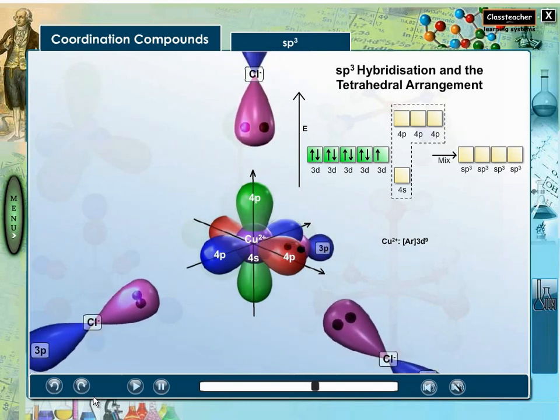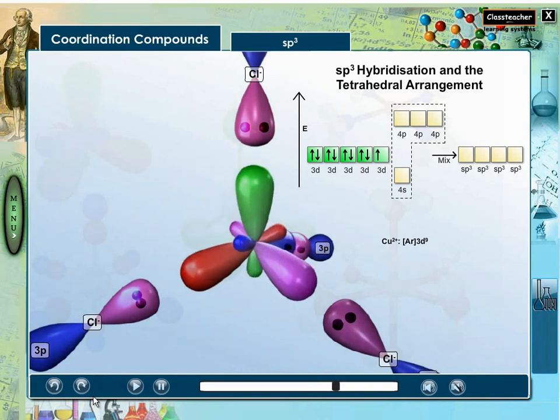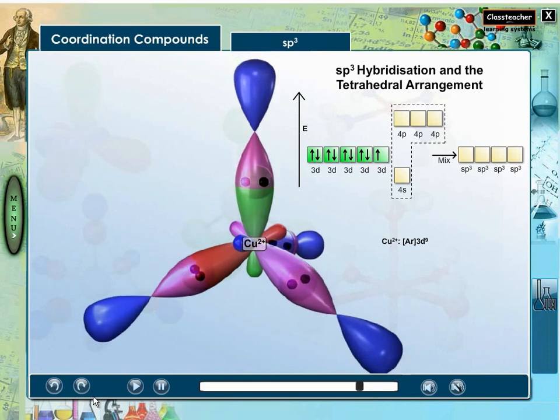3p orbitals of chloride ions overlap with them to form four copper-chloride bonds. Each chloride ion donates a pair of electrons and forms a copper-chloride bond.